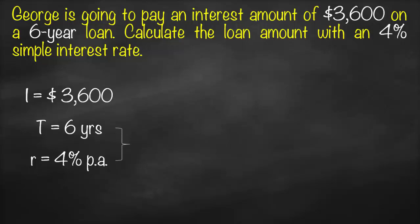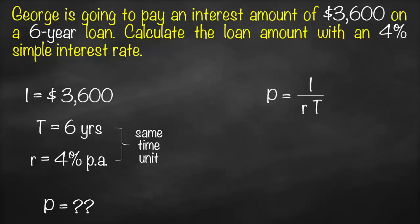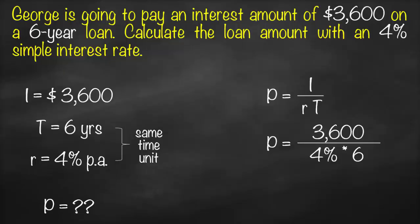We need to calculate our principal. Remember, simple interest rate and time must have the same time unit. Time is in years and the rate is per annum, so they match and we can substitute directly. Principal = I ÷ (r × t) = $3,600 ÷ (4% × 6 years), which gives us a principal of $15,000.